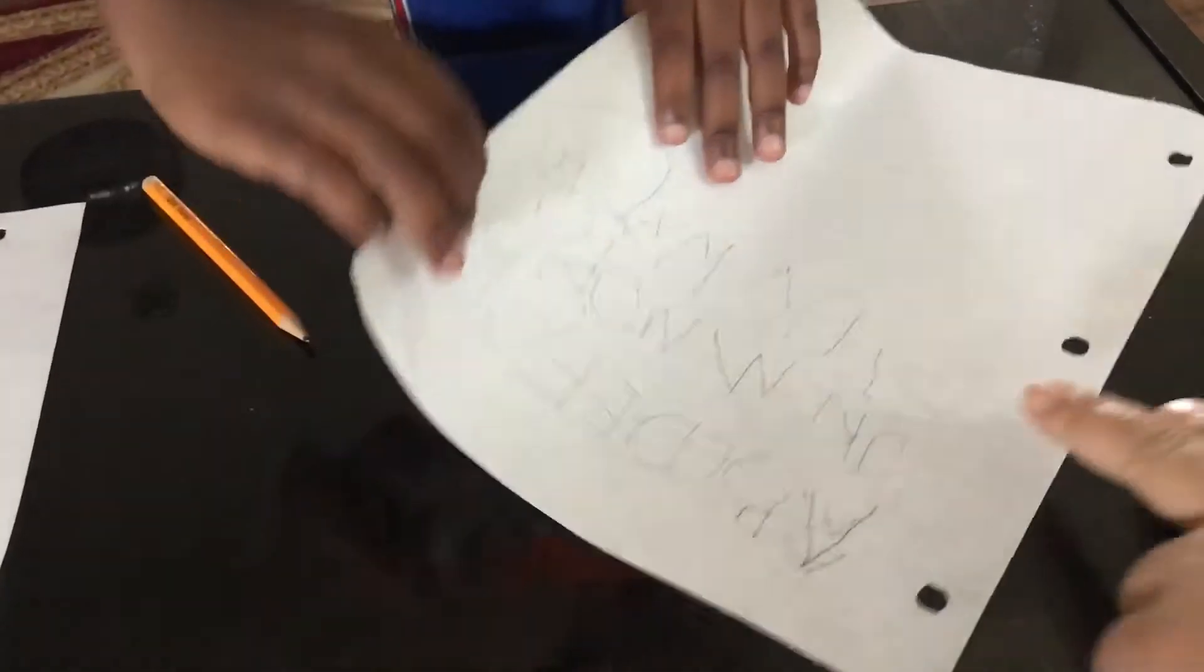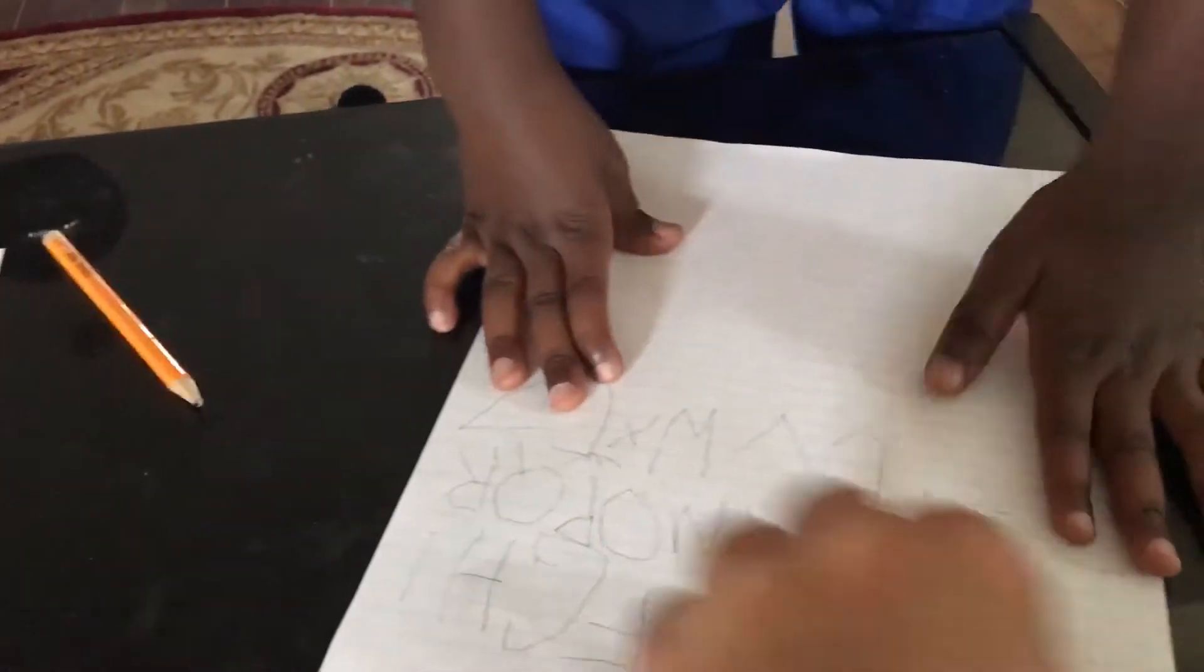I made ABCs. Can I see? Yeah. It has one, two, three. Tell me. It has one, two, three.